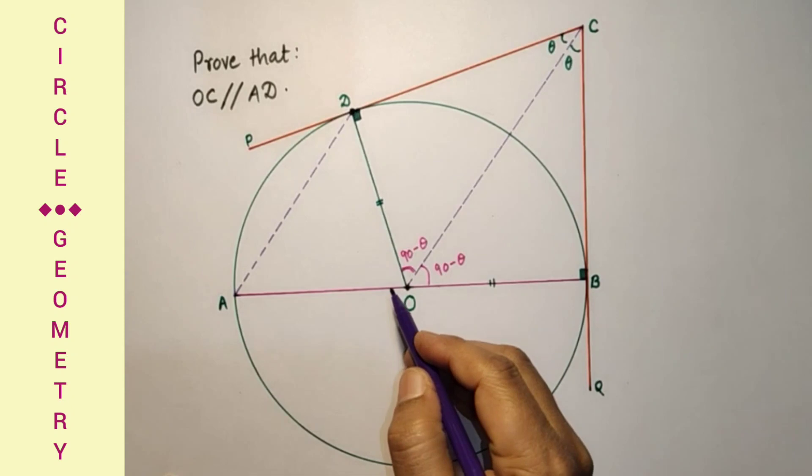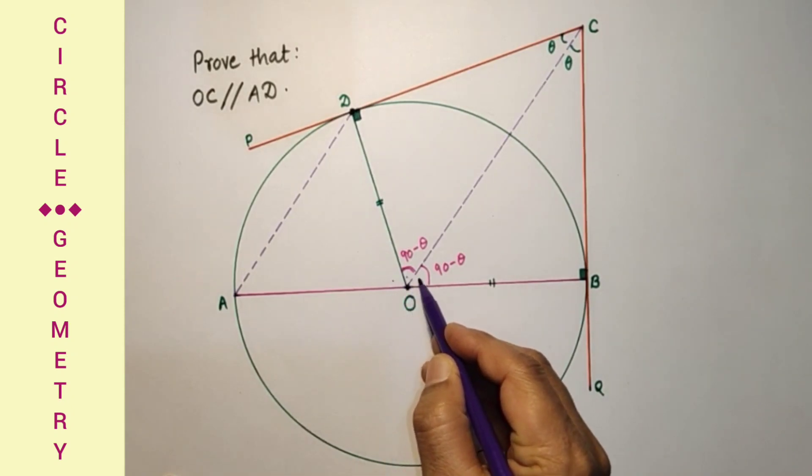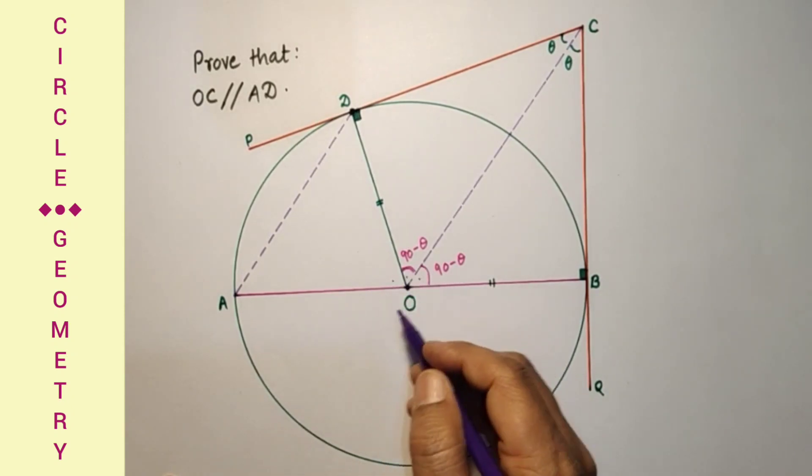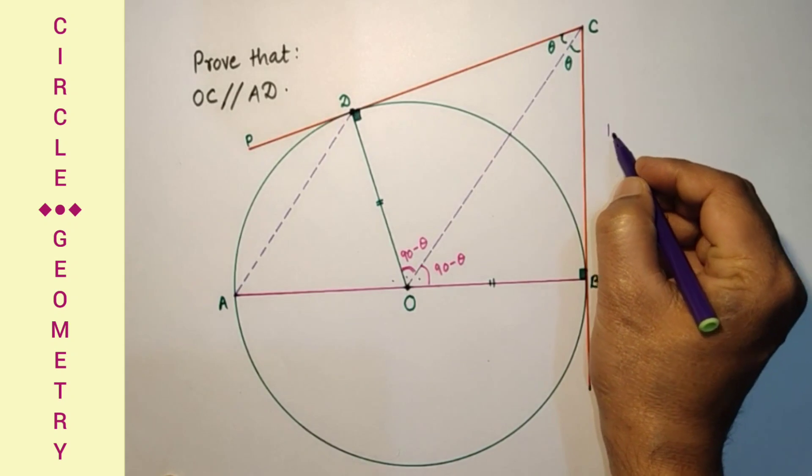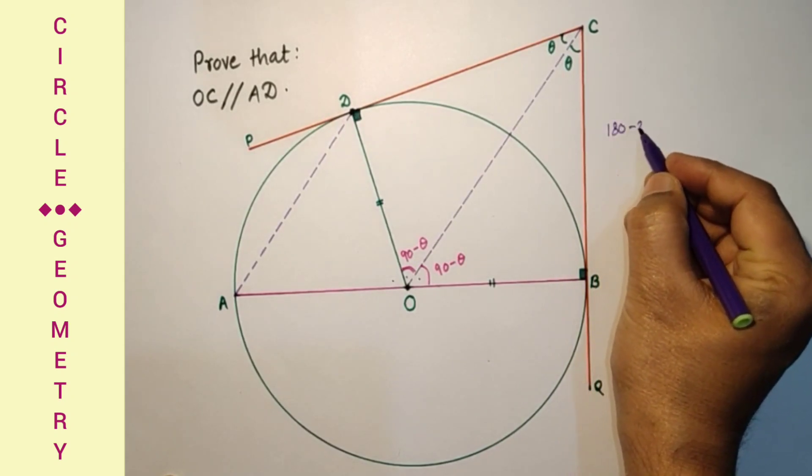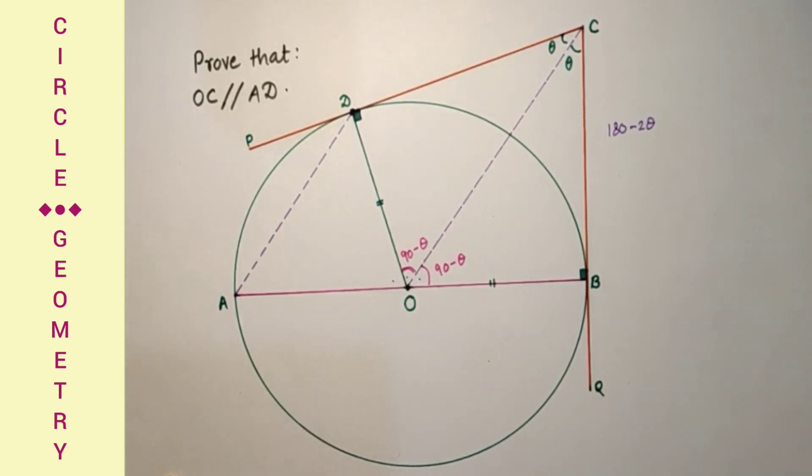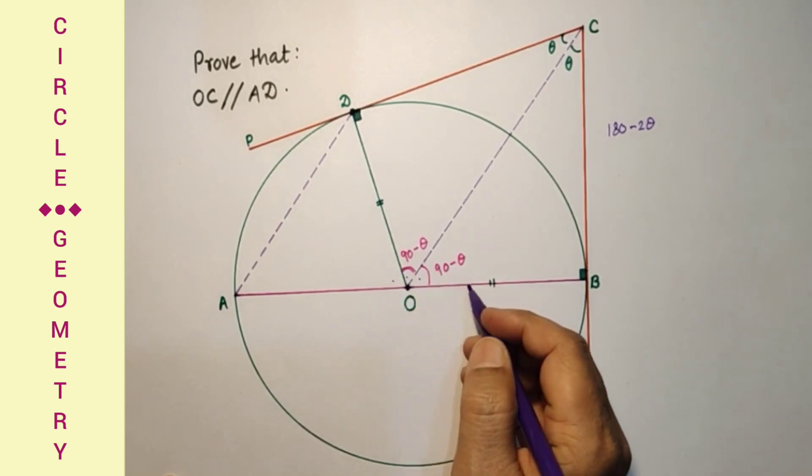If we add these three angles it will be 180. Adding these two it will be 180 minus 2 theta. Sum of these two is 180 minus 2 theta.